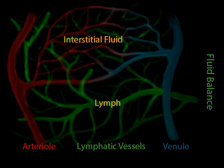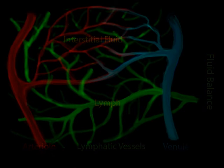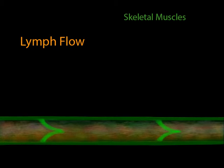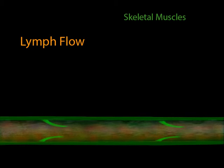How it gets the lymph there is pretty amazing. There is no heart for this system of vessels to pump the lymph around. So, how does lymph get to the locations it needs to be delivered to? The lymph moves through your body when you move your skeletal muscles. The contraction of skeletal muscles squeezes the nearby lymph vessels, pumping them and pushing lymph through the vessels. In addition to the contraction of skeletal muscles, there are two other means by which lymph travels through the lymphatic system.